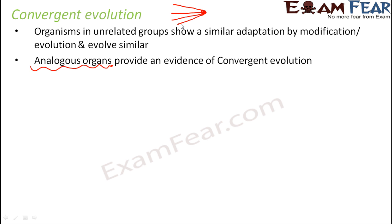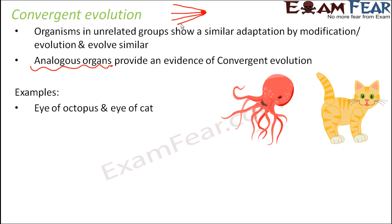Let's look at some examples of analogous organs. For example, the eye of an octopus and the eye of a cat. Octopus and cat are unrelated groups — they are completely not related — but the eyes in both of them are structurally different yet perform the same function. So the eye of an octopus and eye of a cat are analogous organs and they provide evidence of convergent evolution.